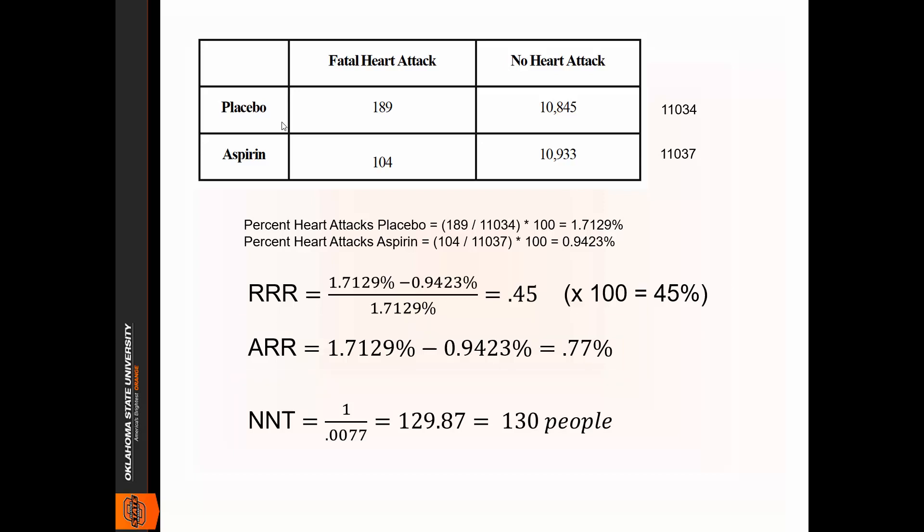Then lastly, we have the number needed to treat, that's NNT. Pretty straightforward. All we do there is take that ARR percentage and move that decimal over two places to the left, so we're turning that into a proportion. Take that percentage, turn it into a proportion, and then take the reciprocal of that proportion. As you can see here, 1 divided by 0.0077, and that gives you 129.87.